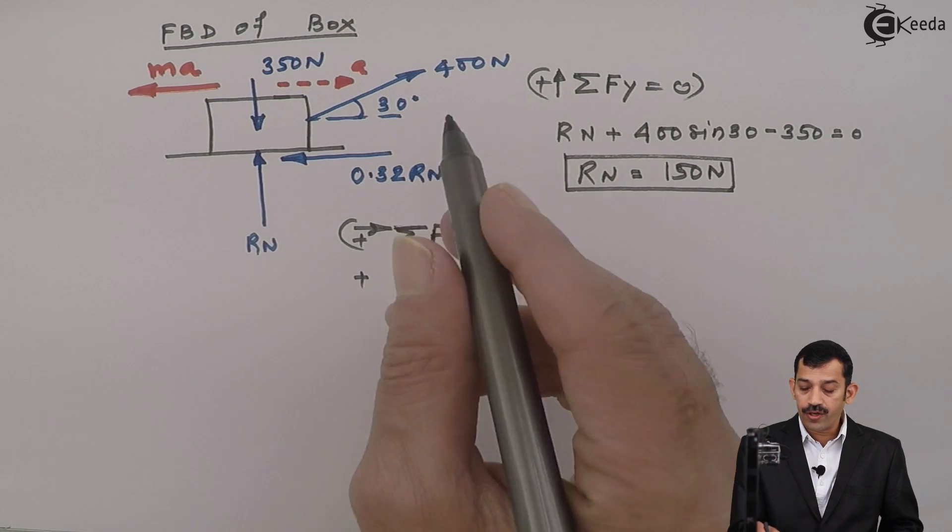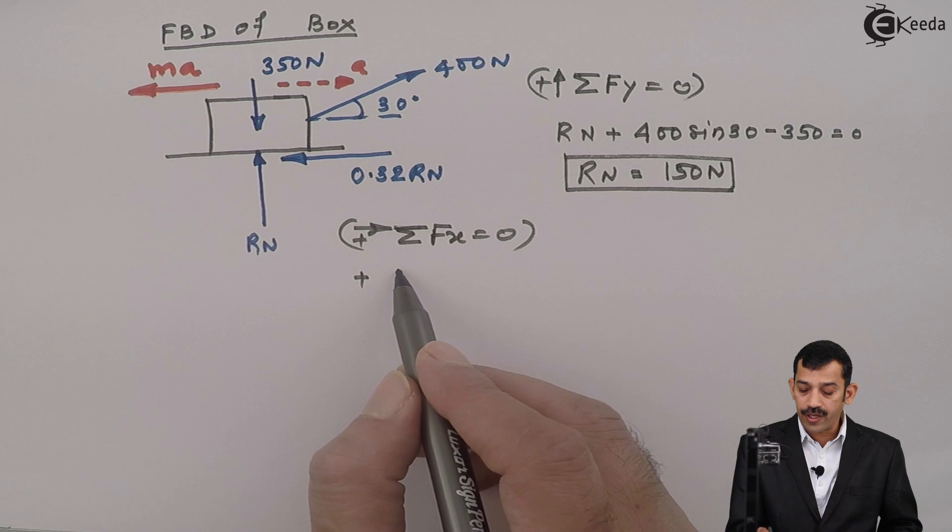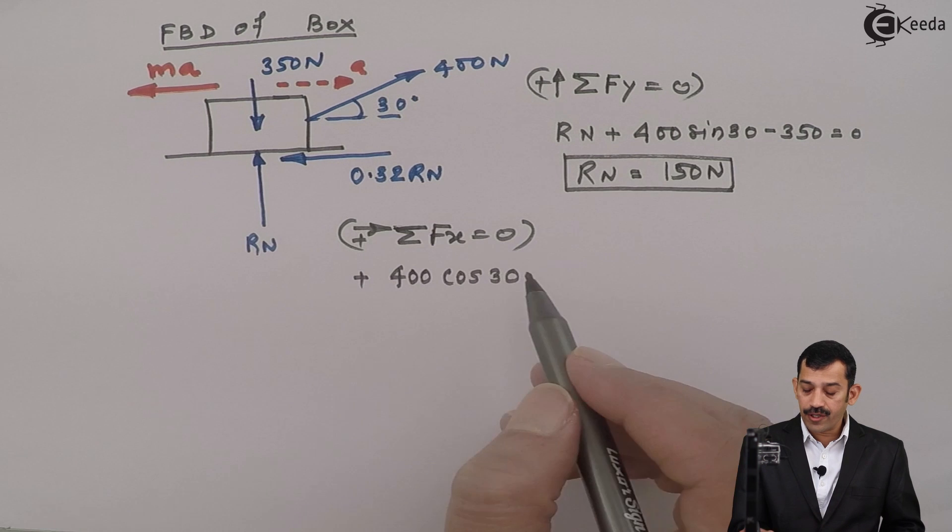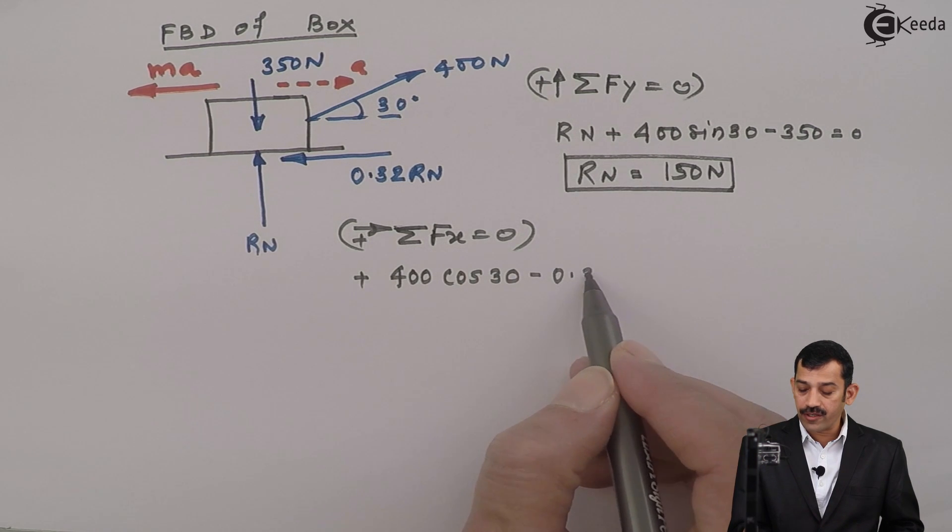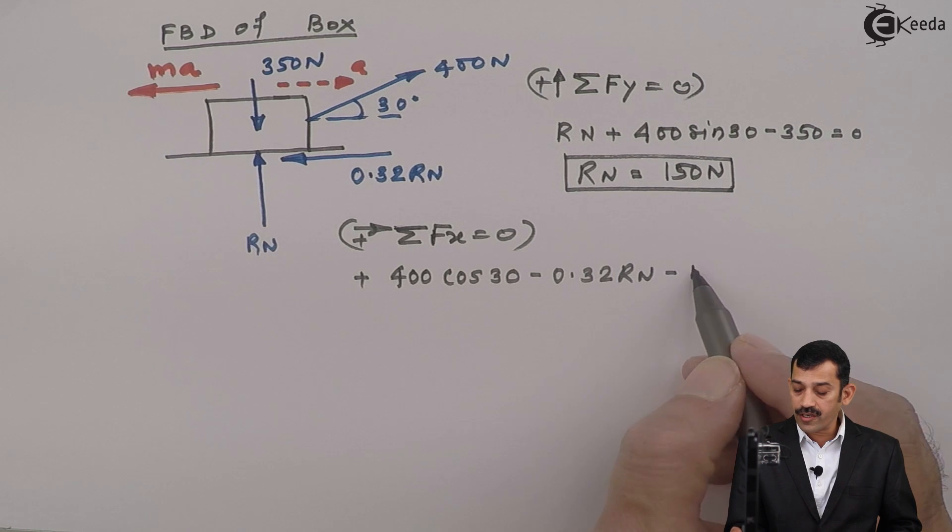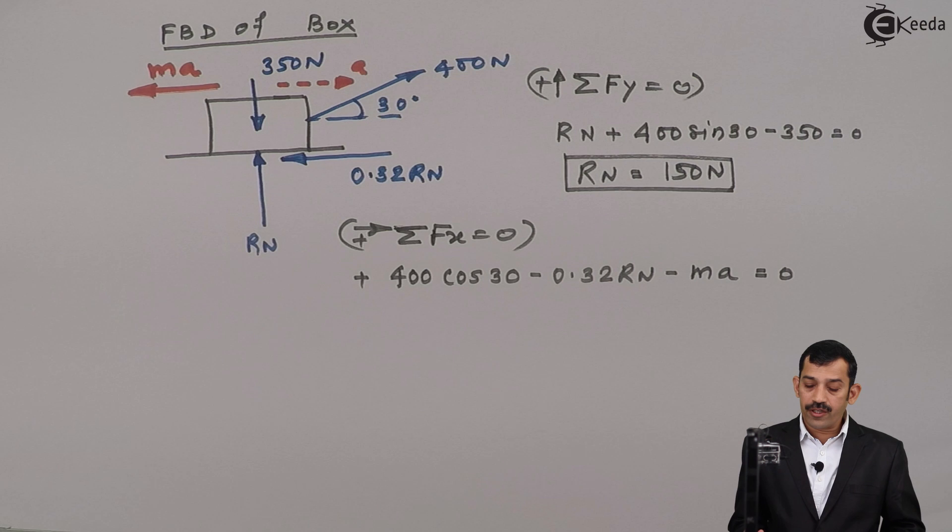Therefore, what we will get here? Component of 400 rightward plus 400 cos 30. Frictional force minus 0.32 into Rn. Inertia force again M into A equal to 0.